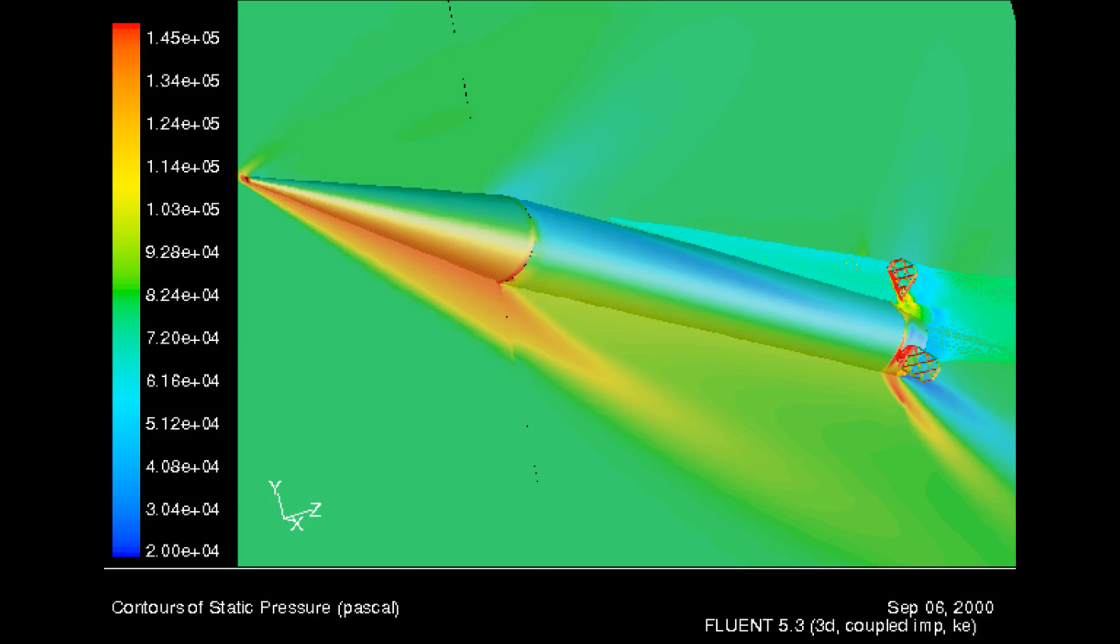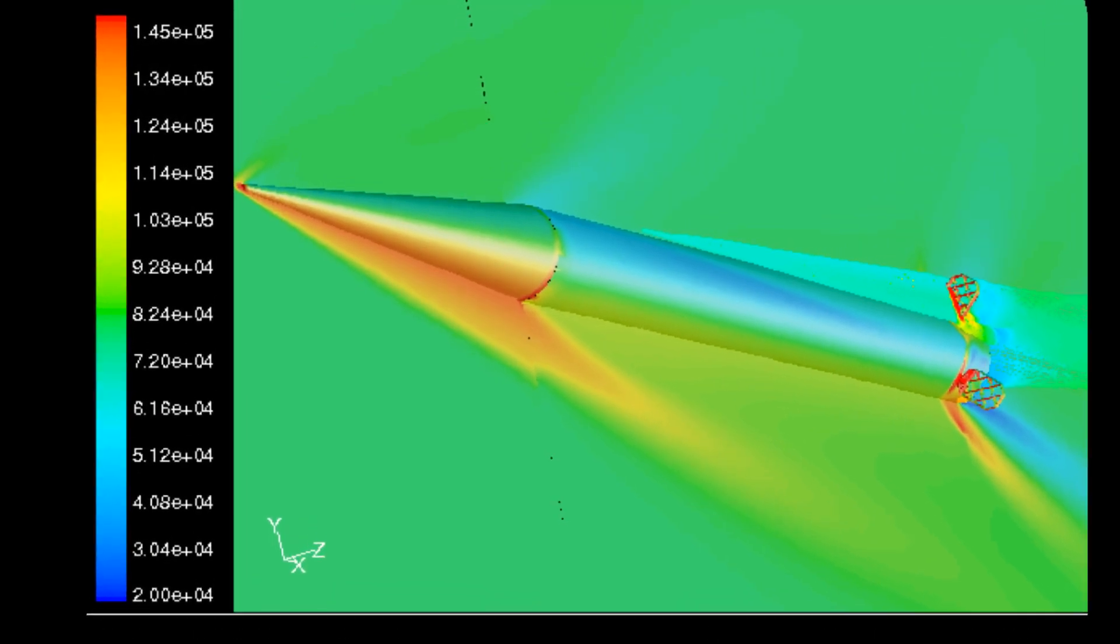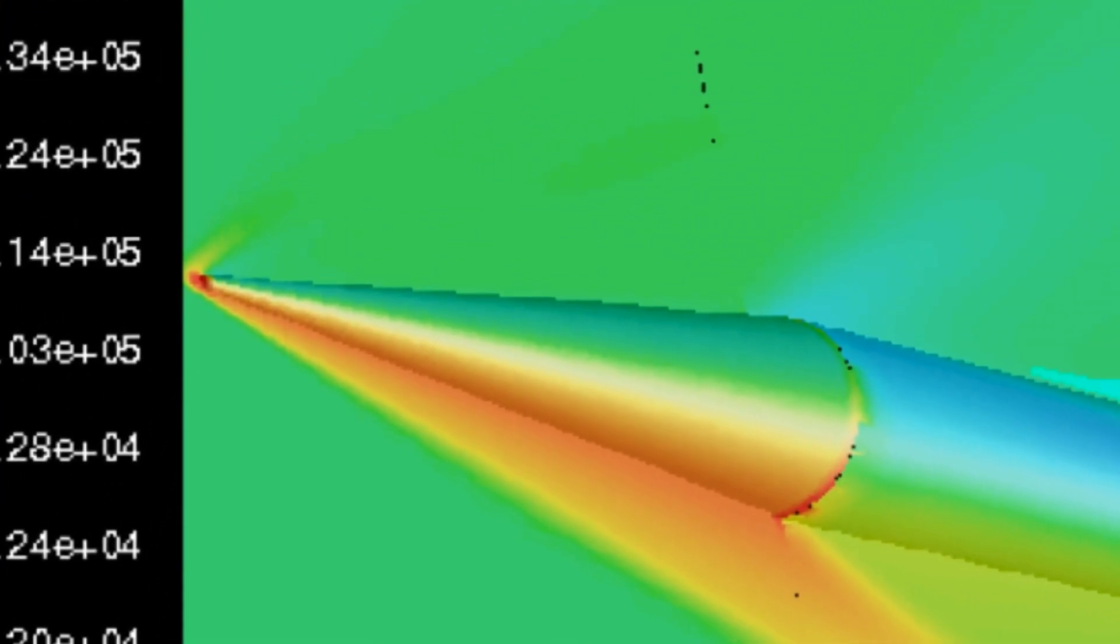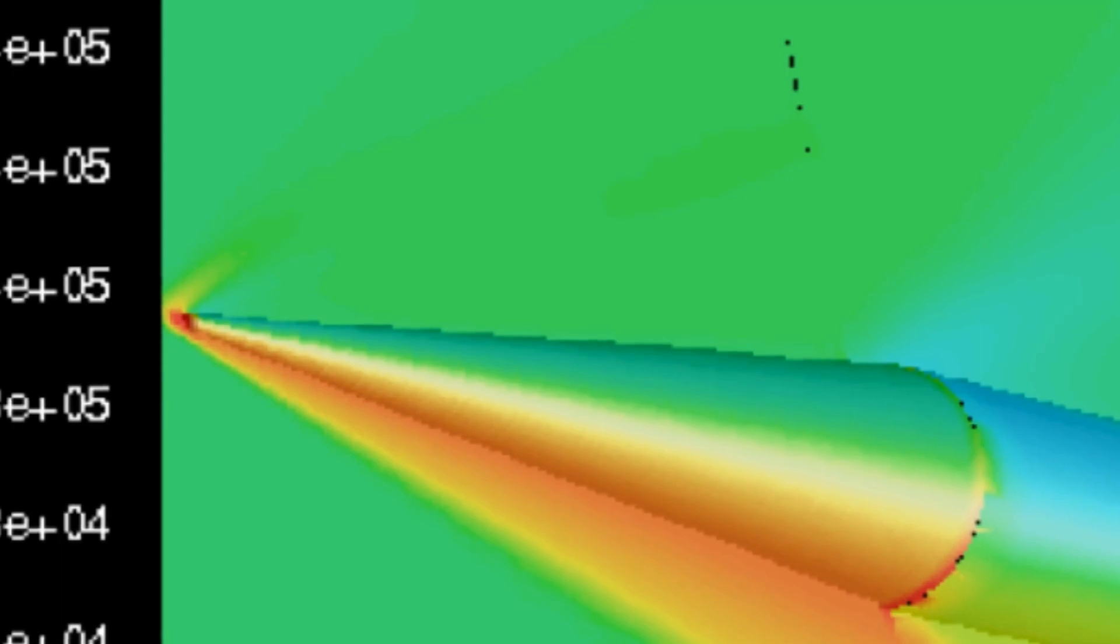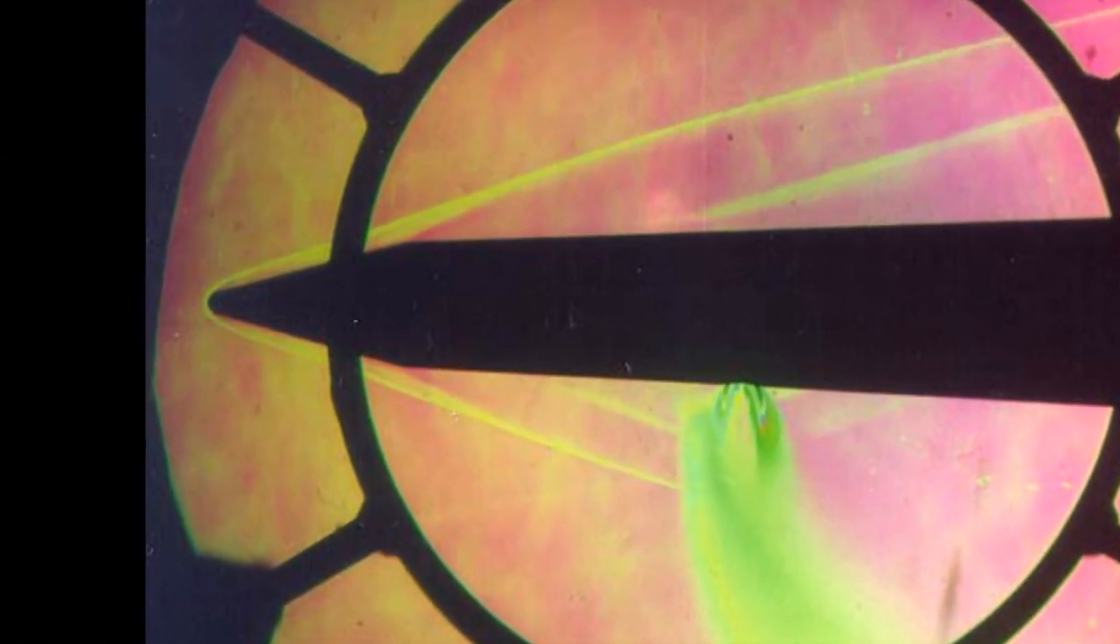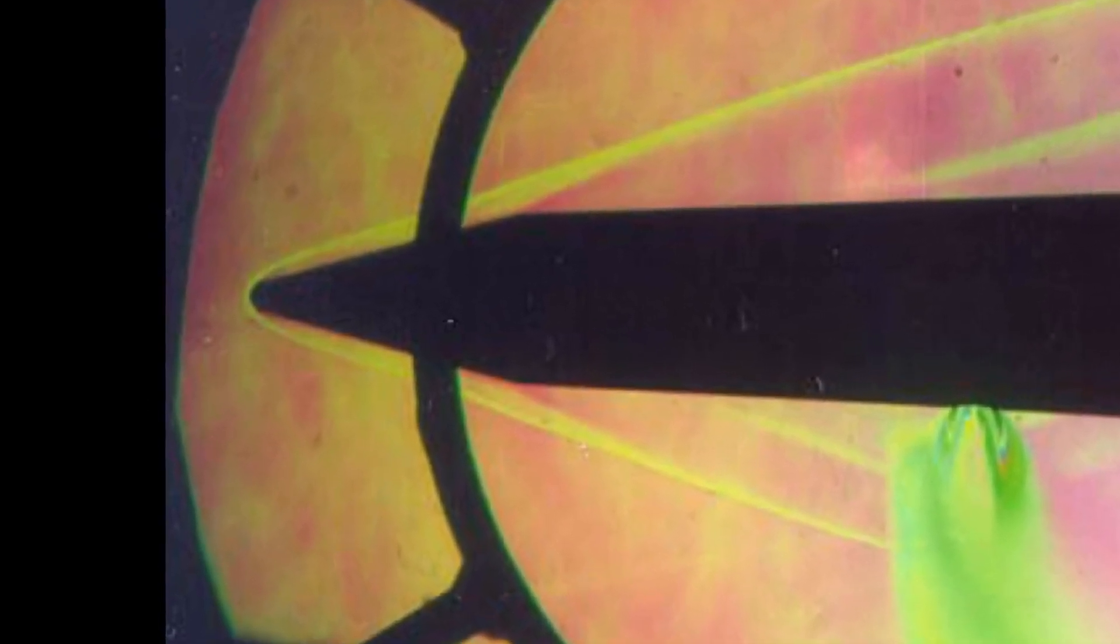As we discussed in previous videos, perfectly sharp leading edges are not physically possible, and so in reality we will always have a finite stagnation region at the tip. We can however control the size of this stagnation region via varying the geometry of the vehicle's tip. A normal shock occurs immediately before the stagnation region, greatly compressing and heating the incoming gas flow.